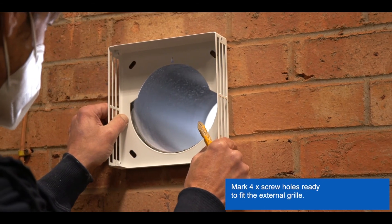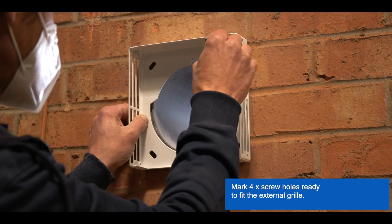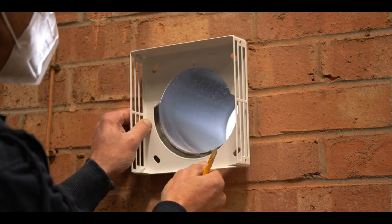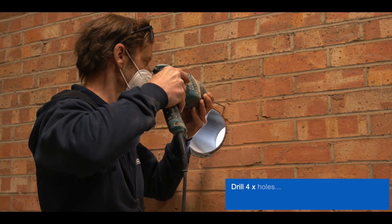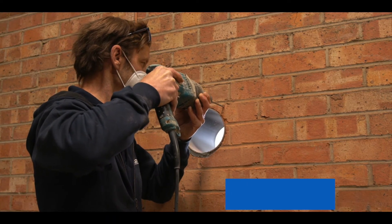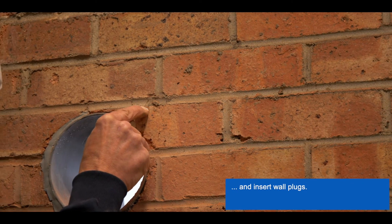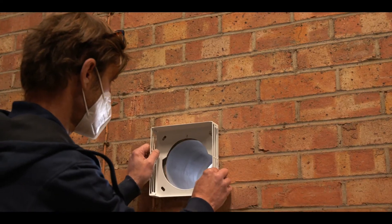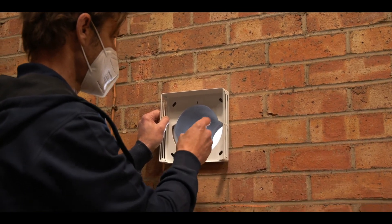Mount the external grill back plate on the outer wall. Mark four screw holes, drill four holes, and insert the wall plugs. With the external grill back plate in position, screw to the outer wall.